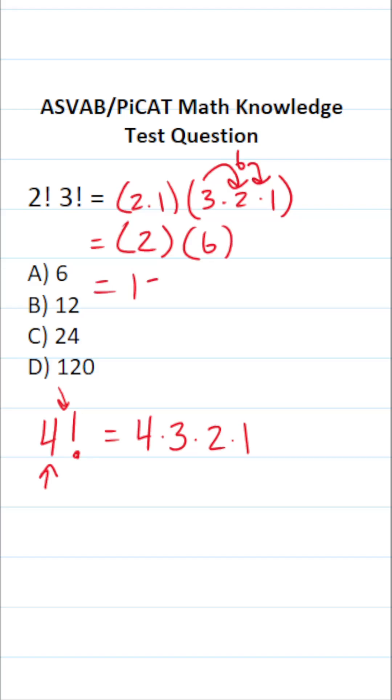This becomes 2 times 6 are 12. So in other words, 2 factorial times 3 factorial is going to be B, 12.